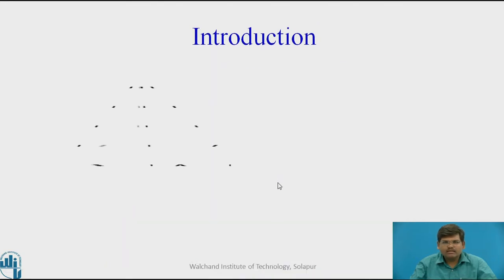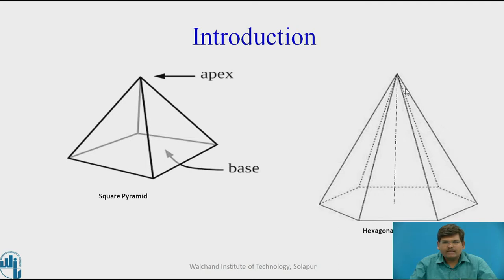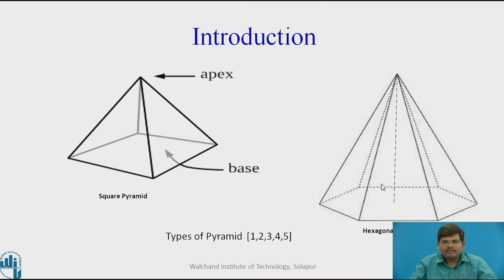Let us look further at the different types of solids. This is a square pyramid and a hexagonal pyramid — a type of polyhedron in which they do not have a top flat surface. They have a point called the apex, whereas the bottom can be any polygon. Here you can see it is a square, so this is a square pyramid with an apex at the top. Instead of rectangular faces, they have triangular faces, whereas prisms have rectangular faces. Similarly, in the hexagonal pyramid, the base is a hexagon and at the top you have the apex with triangular faces.